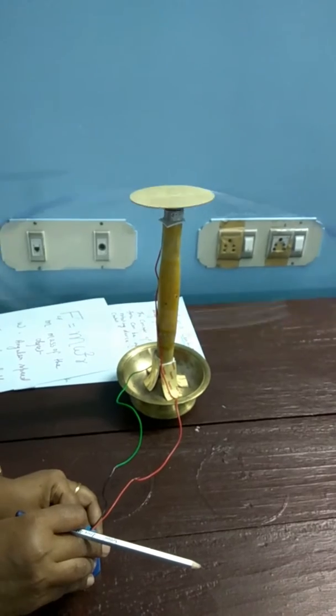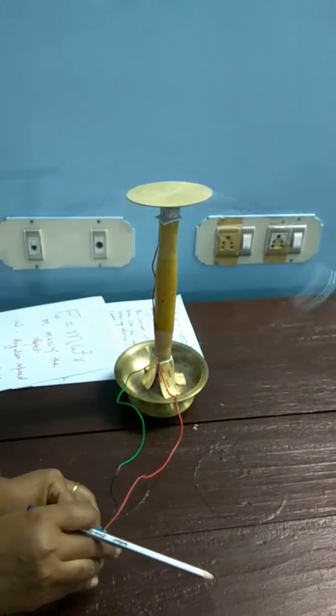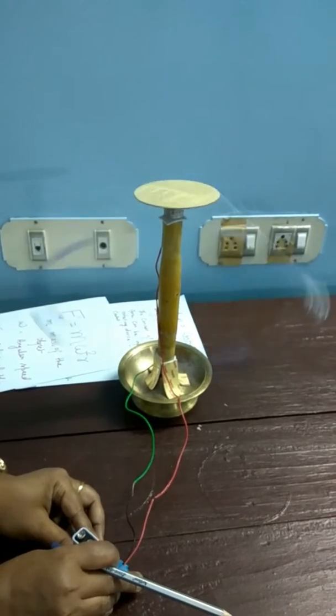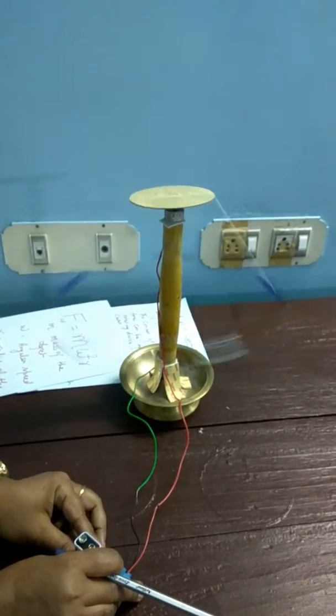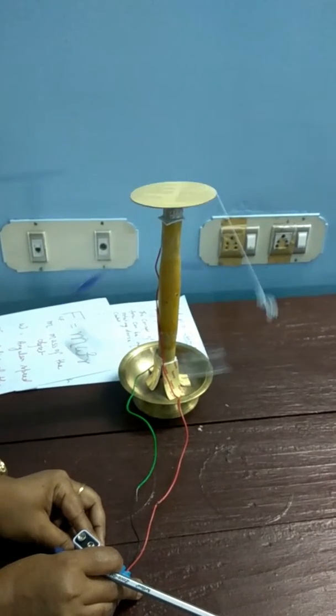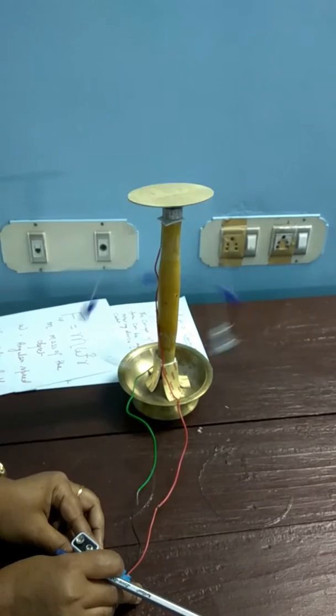Now I will remove the power. Masses are coming towards the axis of rotation. There is a decrease in the angular speed and along with that there is a decrease in the centrifugal force as well.